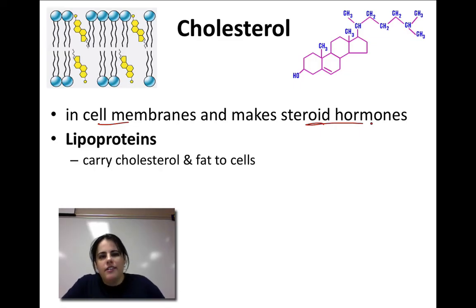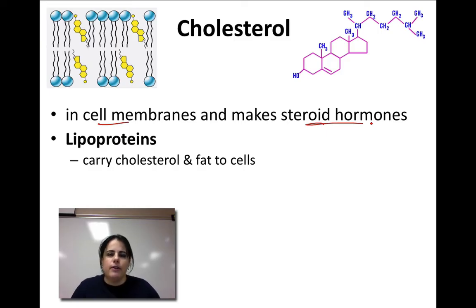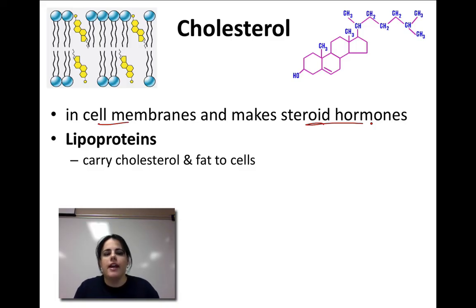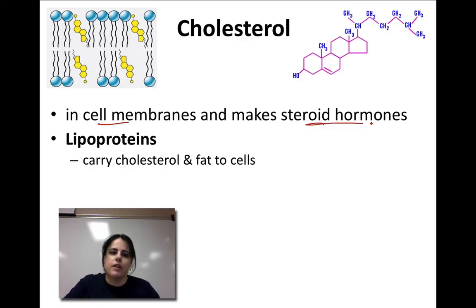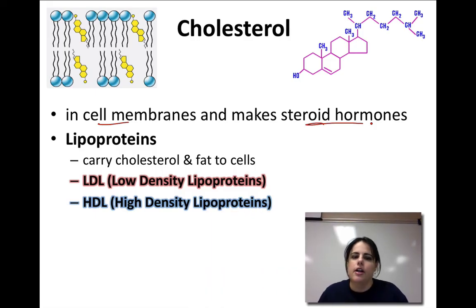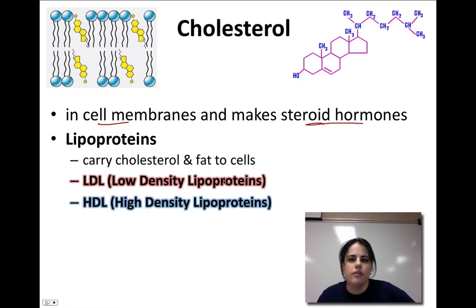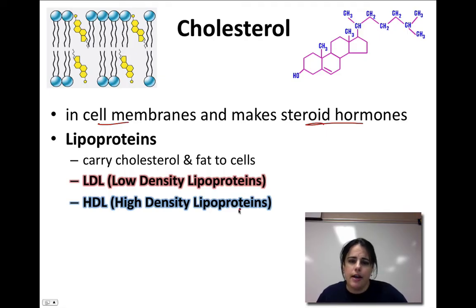Cholesterol needs to be transported to all your cells, but it's a fat and your blood is mostly water — and we know water and fat don't mix. It gets transported by little 'taxi cabs' in our blood called lipoproteins — special molecules that carry cholesterol and fat to the cells. There are two types of lipoproteins. People often confuse these with different types of cholesterol, but there's only one type of cholesterol; there are different lipoproteins that carry it. There's LDL, low-density lipoprotein, and HDL, high-density lipoprotein — known as bad and good cholesterol respectively.